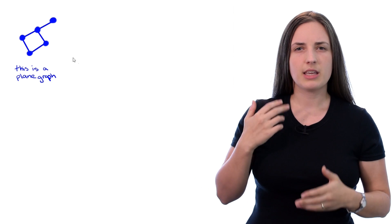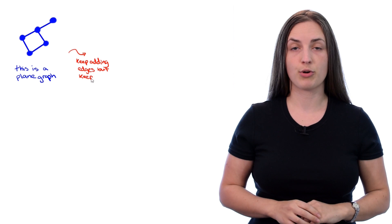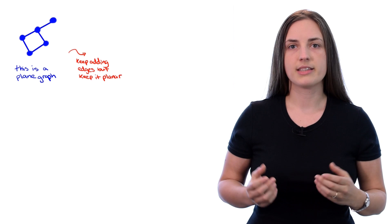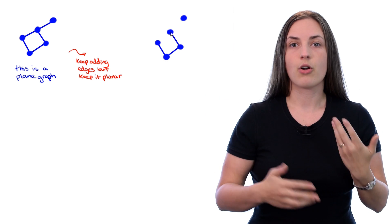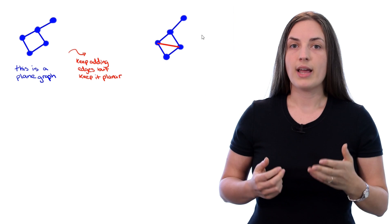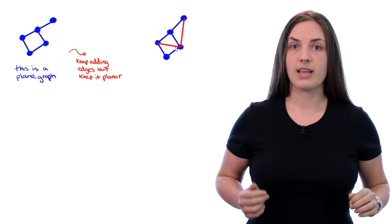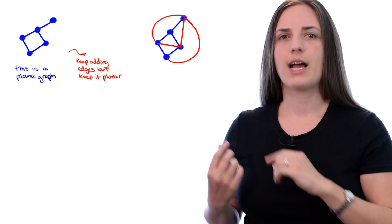But what happens if we keep on adding new edges to this graph while maintaining its property of being planar? Let's see what happens. We'll keep the old graph still in blue and add all of our new edges in red. We want to keep on adding red edges as long as they're not crossing any other edges, and just keep going until we're forced to stop. So this is what happens.